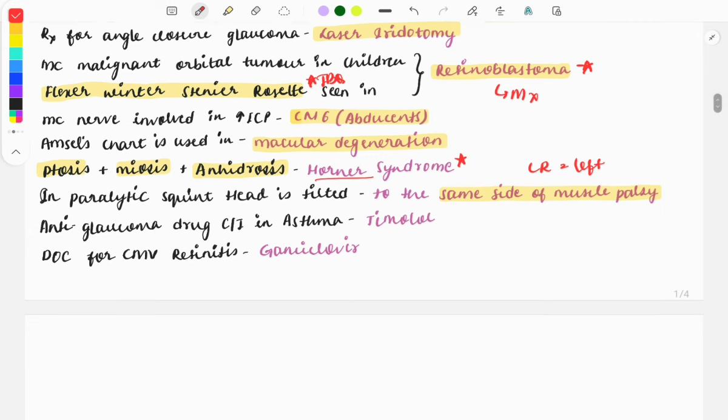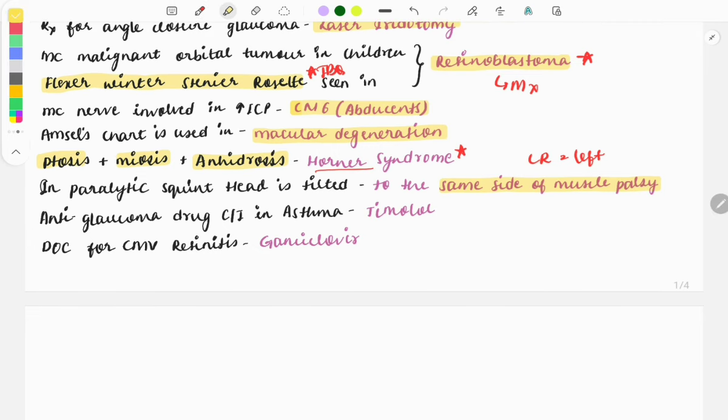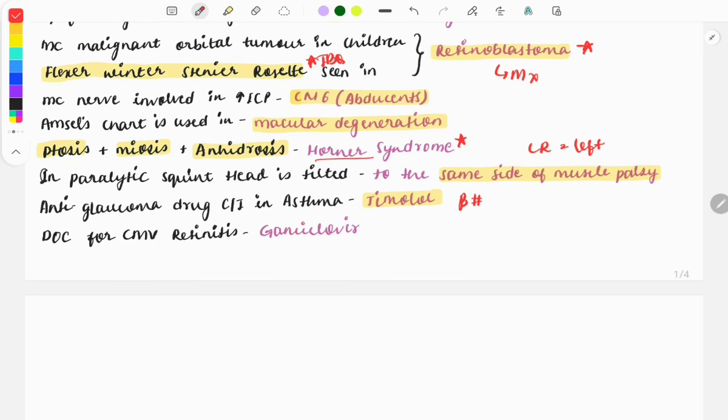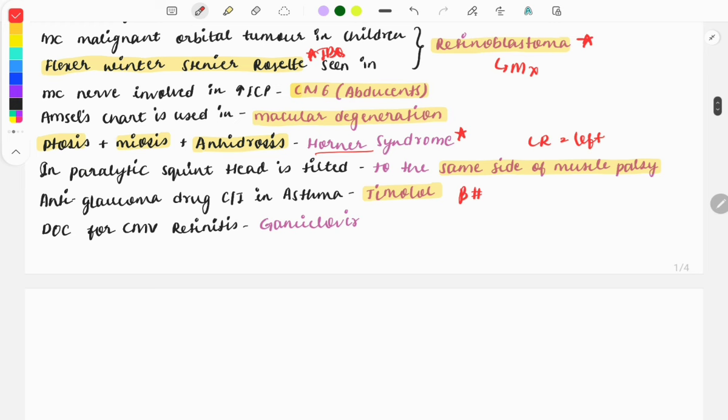Anti-glaucoma drug which is contraindicated in asthma is timolol because it is a beta-blocker and can aggravate asthma. Drug of choice for CMV retinitis is ganciclovir. CMV retinitis is most commonly seen in patients with HIV.